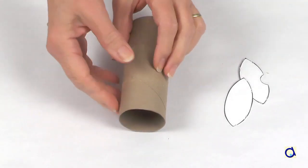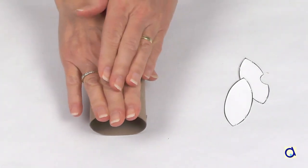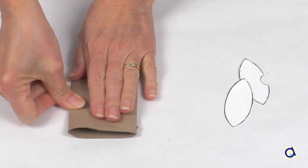A first way to create a gift box is to use a toilet paper roll. Take the roll and flatten it.